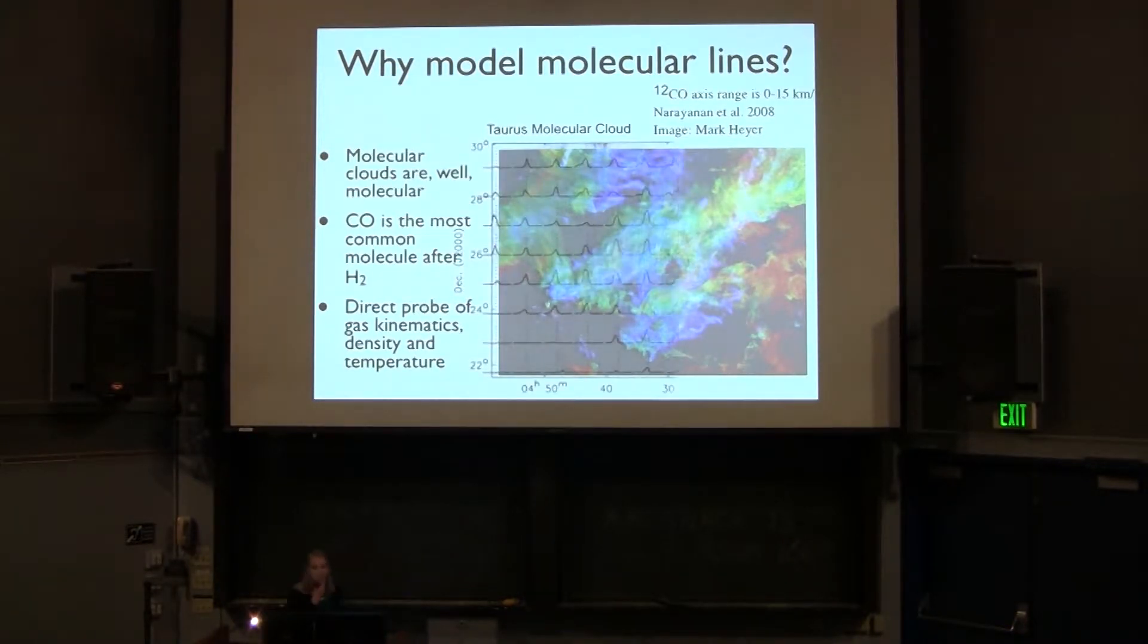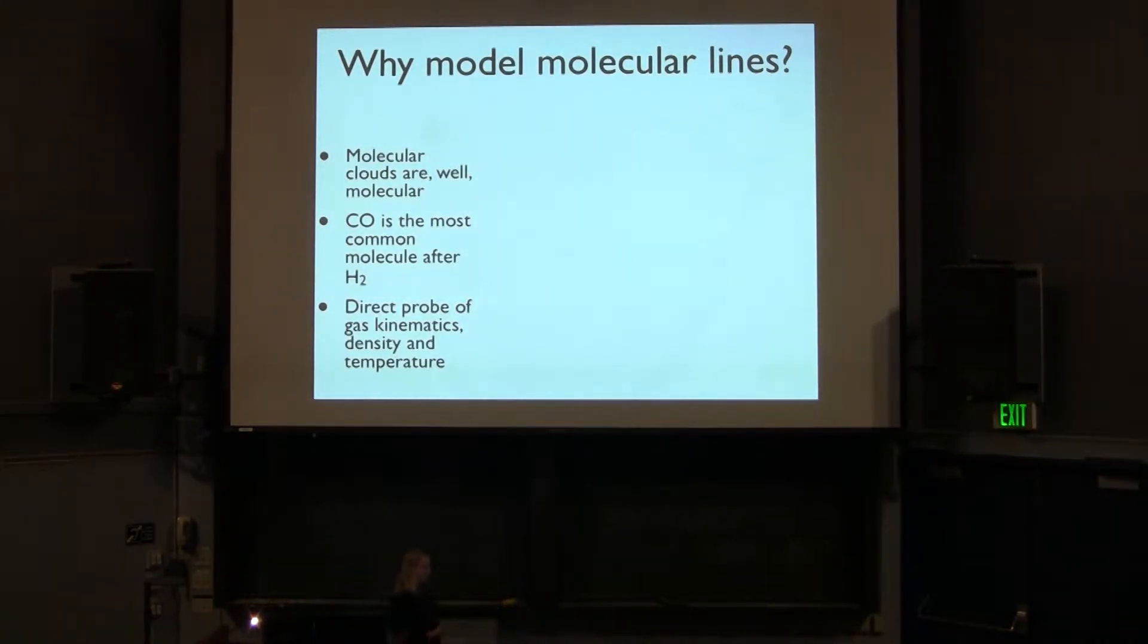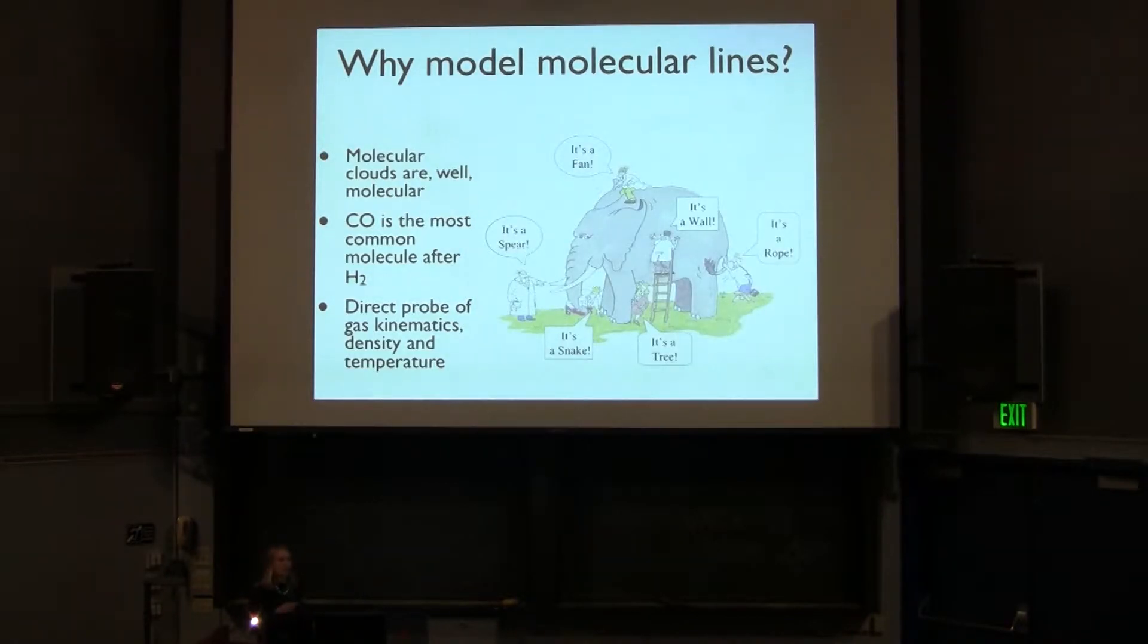Another nice thing is that you have a lot of kinematic information. If you look at line of sight spectra, you can see these line profiles which tell you about the temperature and velocity distribution along the line of sight. So these molecules are telling you directly about the gas kinematics, densities, and temperatures of the cloud.